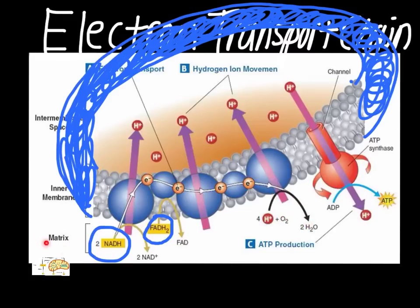The same thing happens to the electron from FADH2 — it gets to the end and eventually goes to bind a hydrogen and an oxygen together to create a water molecule. That water molecule stays inside of the matrix. All of these hydrogens that are building up inside the membrane space are charged particles and cannot go right through the membrane — they're trapped. The only way out is through ATP synthase. Just like last chapter, they diffuse through ATP synthase, which rotates and adds the third phosphate onto ADP — adenosine diphosphate — to make ATP, adenosine triphosphate.